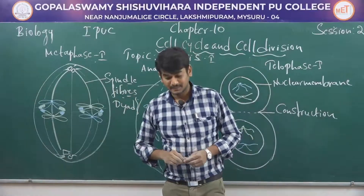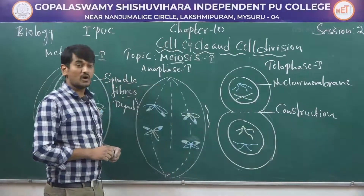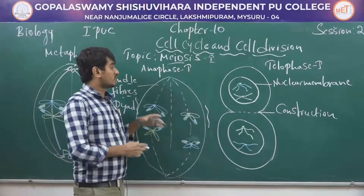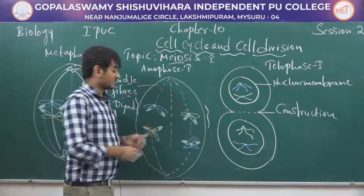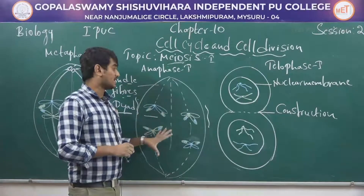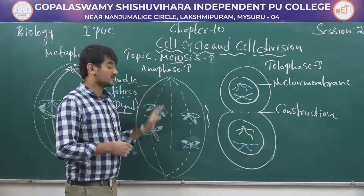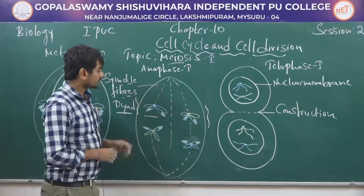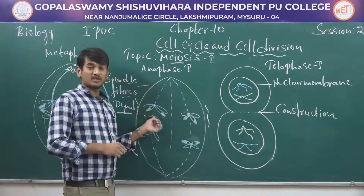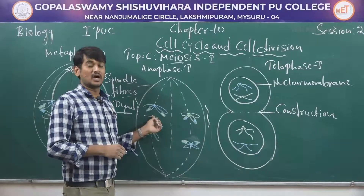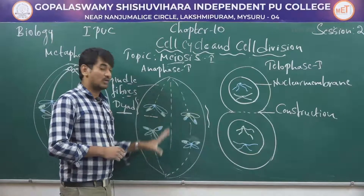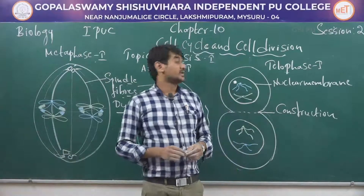In anaphase I, the homologous chromosomes are separated by the help of spindle fibers and move toward opposite poles. These separated chromosomes are called diads, also called univalent chromosomes. Each diad consists of two chromatids attached to a centromere. Finally, each pole contains two groups of chromosomes.